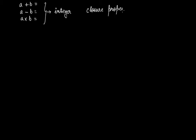Integers are closed under these three operations — addition, subtraction, and multiplication — because in all three cases the result will always be an integer. But what about division? If we divide two integers, will we always get an integer?